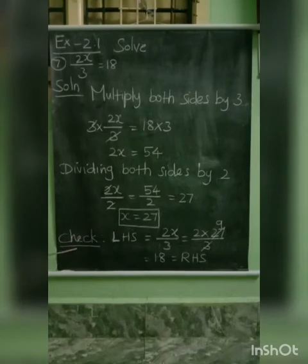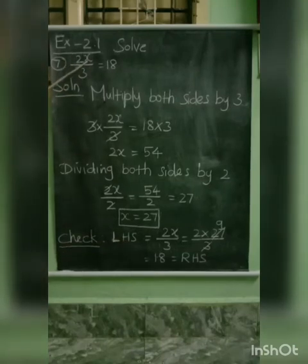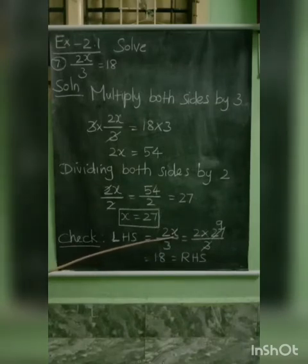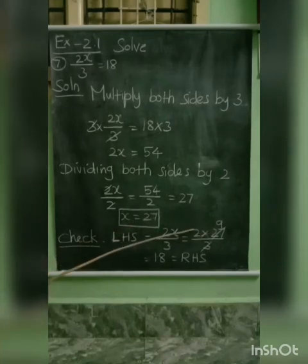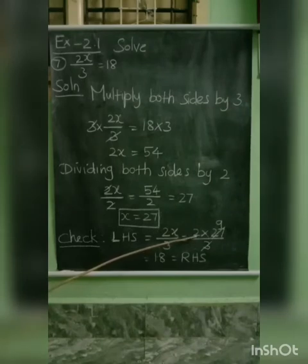Next, check your answer. First, take the LHS of the equation — the left hand side has the variable. So, take the LHS: 2x by 3, which is equal to. Now, substitute the value for x. The value of x is 27, so we have 2 into 27.